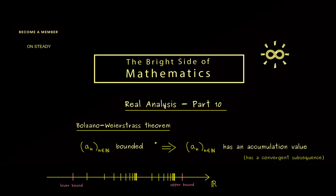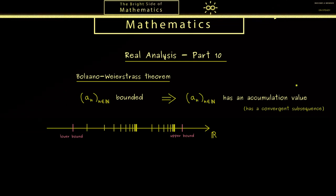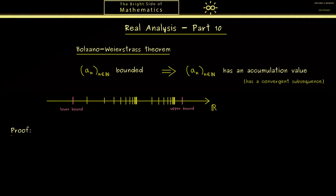Therefore you find at least one point where infinitely many sequence members cluster. Indeed that's the whole statement of the Bolzano-Weierstrass theorem. Okay, then I would say let's start proving it. In order to do this, let's take the picture from above again. Let's call the lower bound c0 and the upper bound d0.